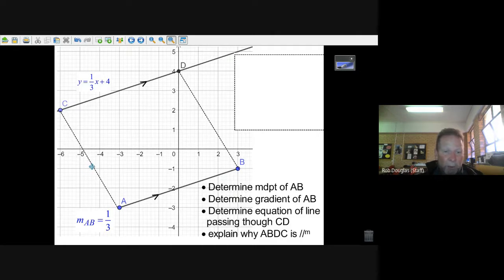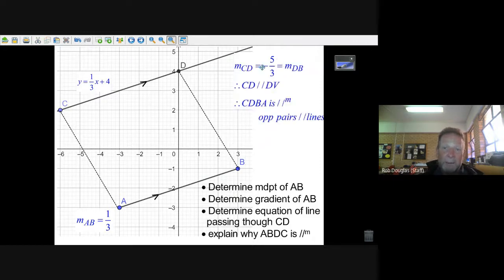Why do we know they're parallel? Well, what we do, all we have to do is work out the gradient of CA. And I'm going to do it, I'll cheat a little bit and just do it from the graph. I can see that I go three to the left and one, two, three, four, five up. If I put these points into the gradient formula and did the gradient, I'd get negative five over three. But let's try the same thing between D and B.